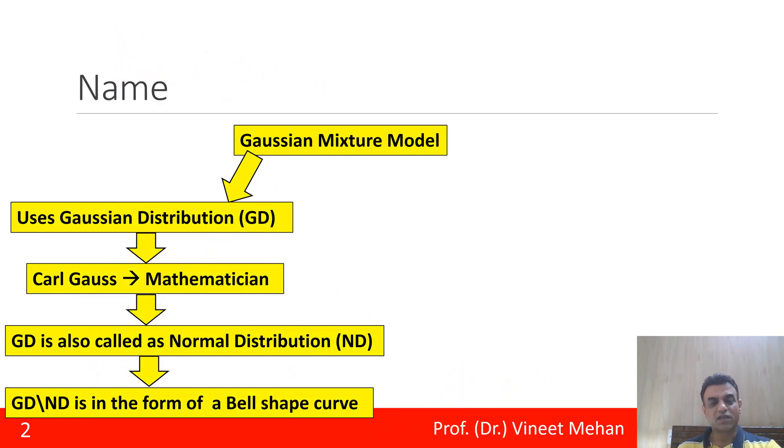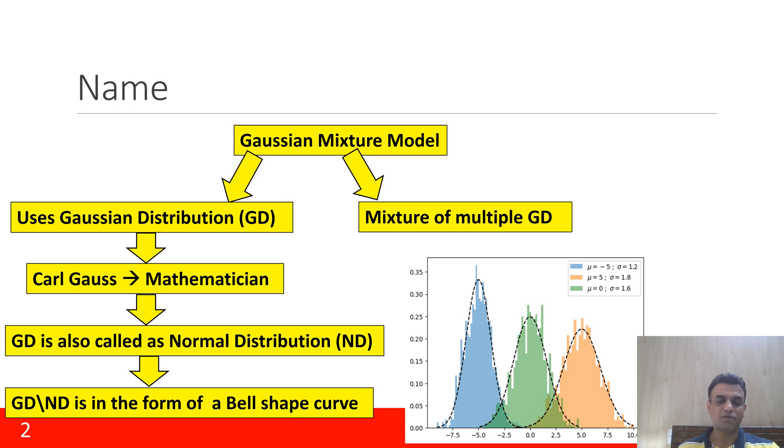Then the second word in this name Gaussian Mixture Model is mixture. It is called as mixture because it is a mixture of multiple Gaussian distributions. Like you can see in the diagram here we could find three Gaussian distributions - three peaks are there, one in blue, one in green, one in red. That is why we call it as a mixture.